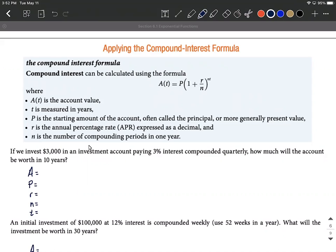Let's jump into a couple examples. We want to invest three thousand dollars in an investment paying 3% interest compounded quarterly. We want to know how much is going to be in the account in 10 years. We don't know what A is at this point.